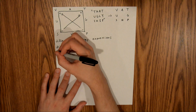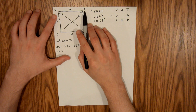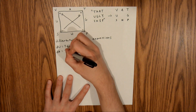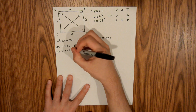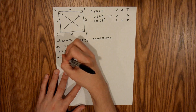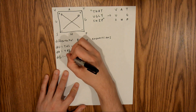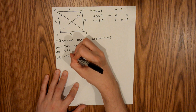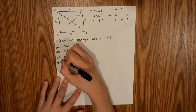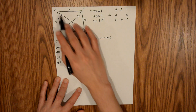Now let's do enthalpy. dH equals — again starting at your two non-natural variables, in this case V and T. Starting at T again, you get TdS + VdP. Now for Gibbs free energy: dG = −SdT + VdP. And finally for the Helmholtz free energy: dA = −SdT − PdV.